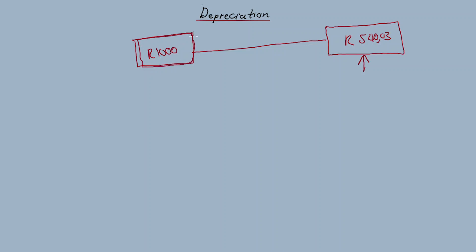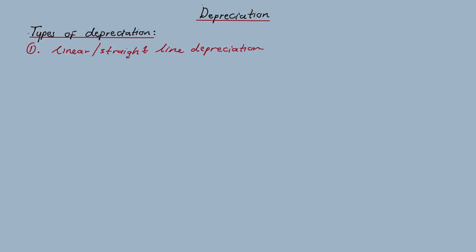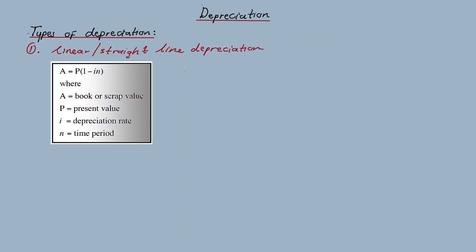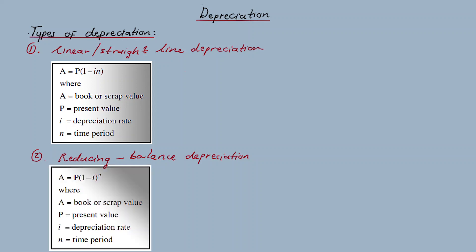Depreciation is calculated in two ways. The first one is linear or straight line depreciation, calculated using the formula A = P(1 − i·n), where A represents the book or scrap value, P is the present value, i is the depreciation rate, and n is the time period. The second type is reducing balance depreciation, with formula A = P(1 − i)^n. The variables A, P, i, and n are the same as above.